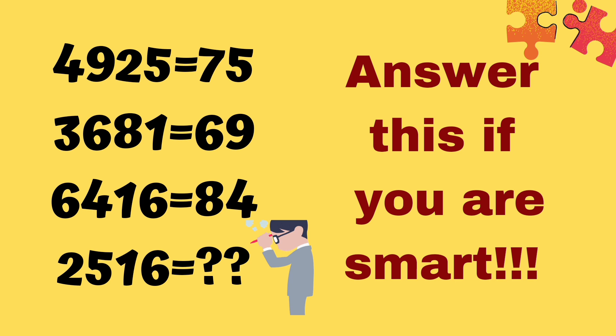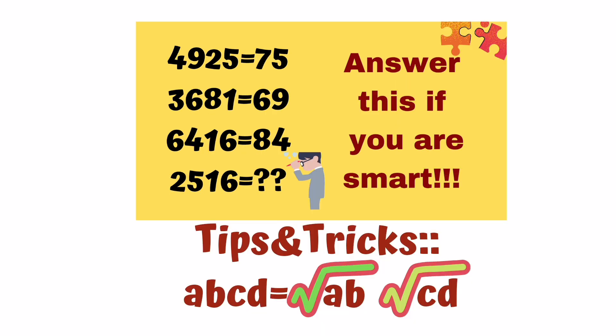Friends, you will give 4925. We will apply the tricks: ABCD equals square root of AB and square root of CD.